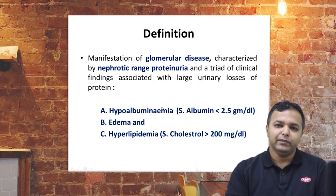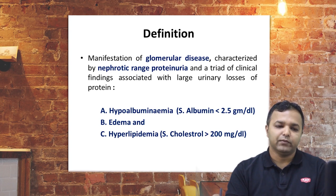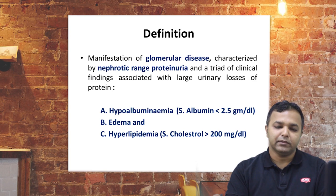How do we define nephrotic syndrome? It is a manifestation of glomerular disease characterized by nephrotic range proteinuria. Because of this, there is a triad of clinical findings associated with large urinary loss of protein: hypoalbuminemia (albumin less than 2.5 g/dL), anasarca or edema, and hyperlipidemia (serum cholesterol more than 200 mg/dL). To label it as nephrotic syndrome, all of these parameters must be present.